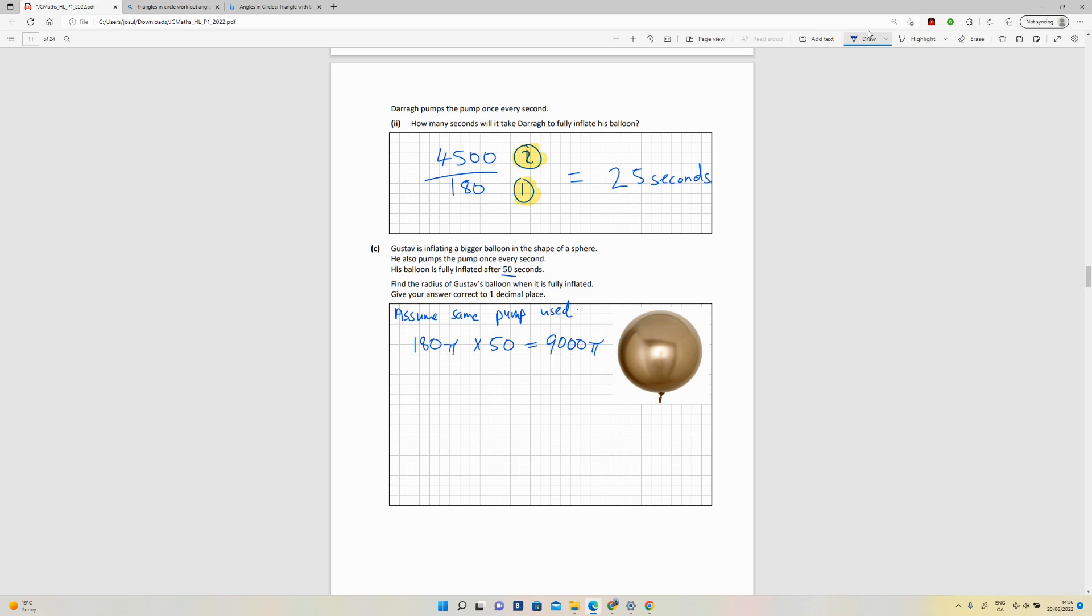If I then use the formula, four-thirds πr³ is equal to 9000π. That's the formula again for the sphere from the log tables. If I simplify that by taking the four-thirds out, I'm going to be left with πr³ equals 6750π.